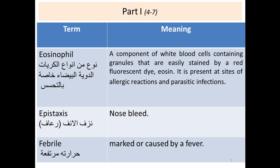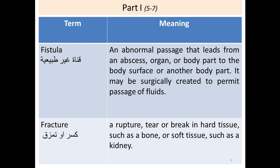Epistaxis is nose bleeding. Febrile means there is elevation in body temperature, while afebrile means there is no fever. Fistulae is an abnormal passage that leads from an abscess, forming later on a fistula. Or it may come from an organ to the outside surface of the body, or between two internal organs. It may also be surgically created to permit passage of fluid when there is obstruction — it means there is an abnormal passage.